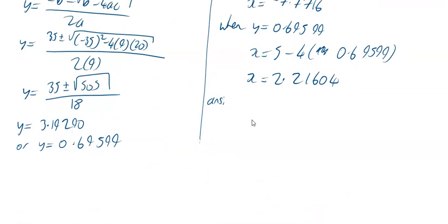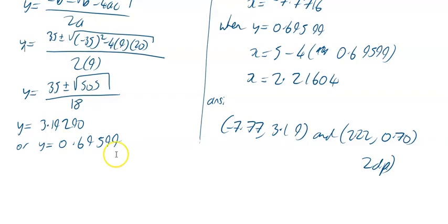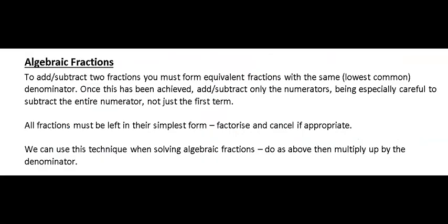So it has to be given as a coordinate. So the first coordinate is going to be (minus 7.77, 3.19) and the second coordinate then is going to be (2.22, 0.70), and they're both to two decimal places.